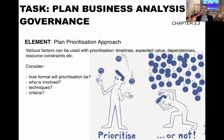Let's look at the element plan prioritization approach — how you would plan to do your prioritization for your initiative. You need to look at things like timelines, expected value, dependencies between requirements, resources, and constraints. You need to think about how formal prioritization will be, who will be involved in prioritization activities, what techniques will be applied, and what the criteria will be. Later in the BABOK guide there is another task that goes into quite a lot of detail around prioritization, so we will talk about that again.